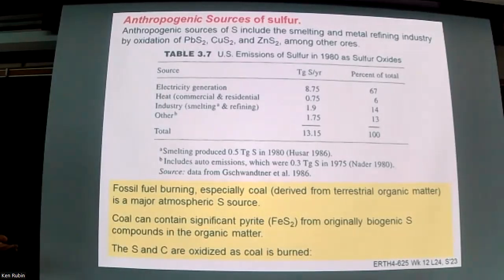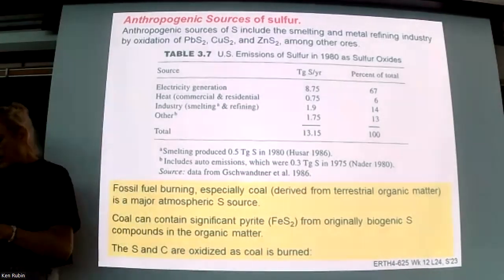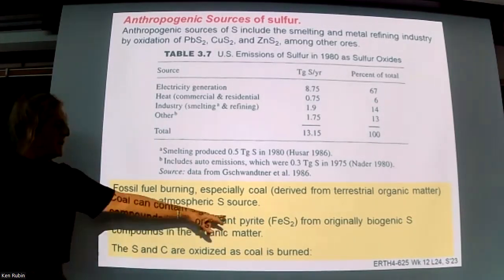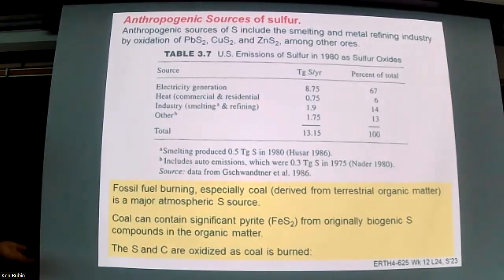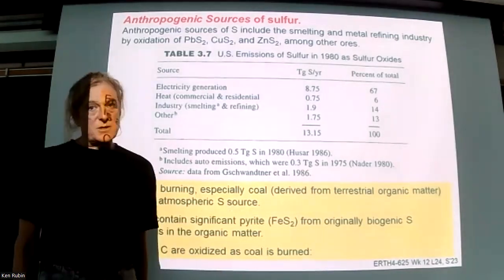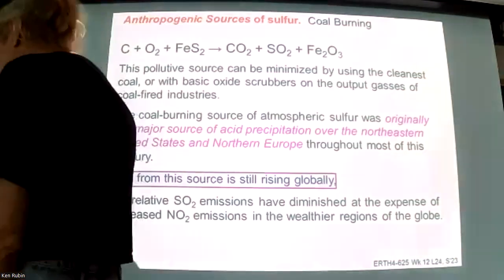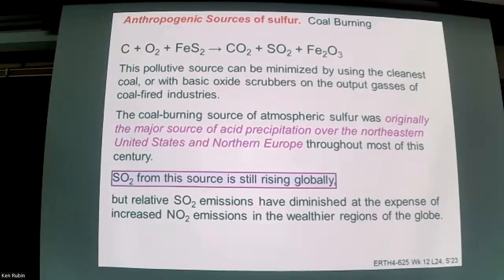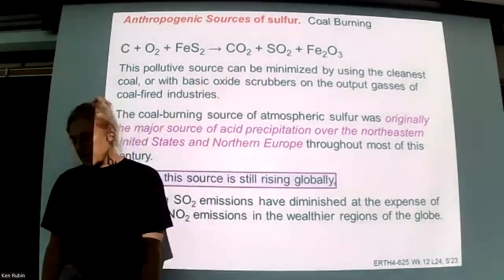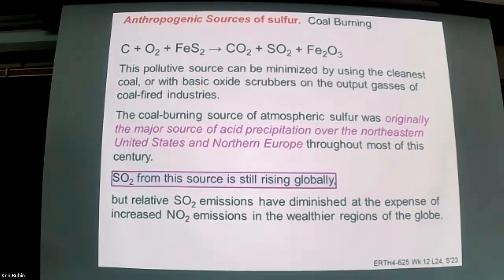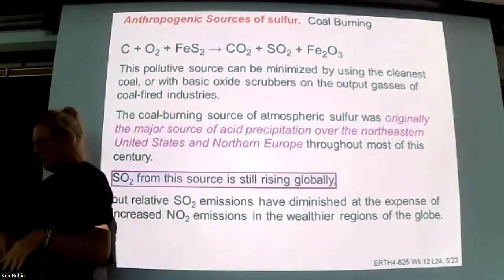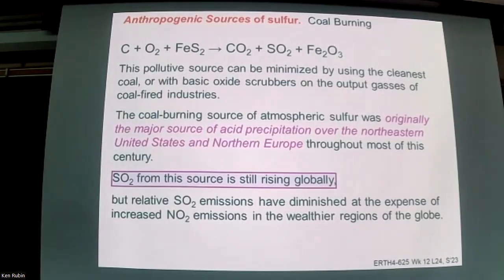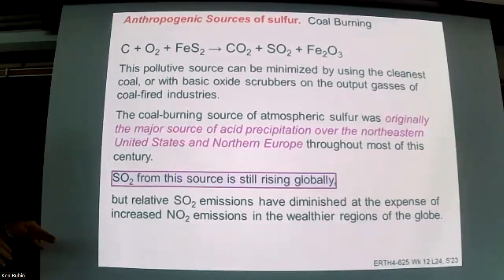Fossil fuel burning is the primary source. The sulfur in fossil fuels comes from the original biological material — in coal, the sulfur is typically associated with pyrite. At the very high temperatures of combustion we're burning carbon to CO2 and also burning the pyrite to make SO2 directly. This is a redox reaction oxidizing carbon, sulfur, and iron simultaneously. Different types of coal and diesel fuel contain varying amounts of sulfur, so per joule of energy you can get more or less sulfur output.